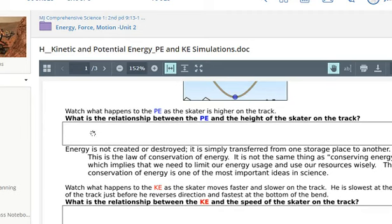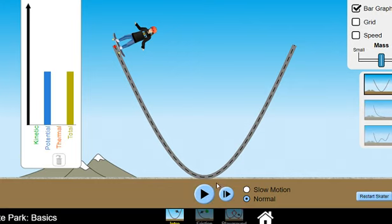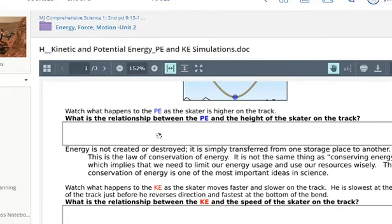So, what's the relationship between PE and the height of the skater on the track? Well, we already know now that PE is potential energy. So let's go ahead and pause the skater at the very top. What do we see about the potential energy? Is it very high or very low? It's in the middle kind of. And then you're going to write down your observation in this first box right here.